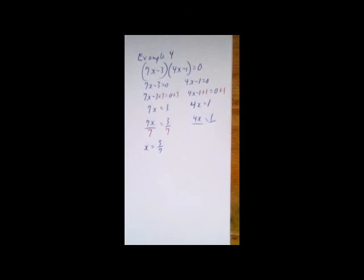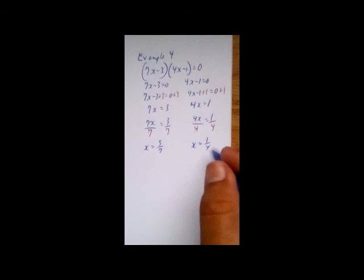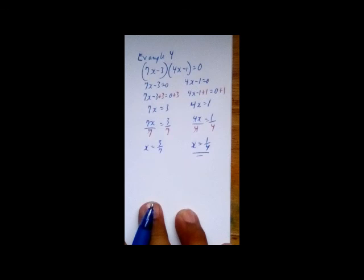For the second factor, 4x - 1 = 0: add 1 to both sides to get 4x = 1, then divide both sides by 4, giving x = 1/4. Those are our two solutions. So those were four examples covering this type of factorized quadratic problem.